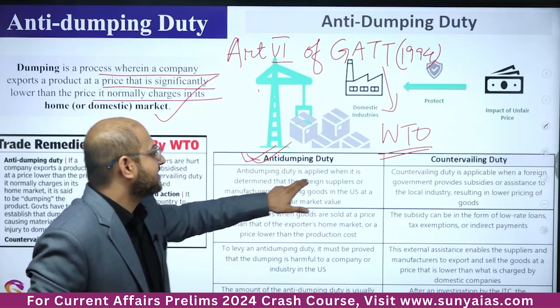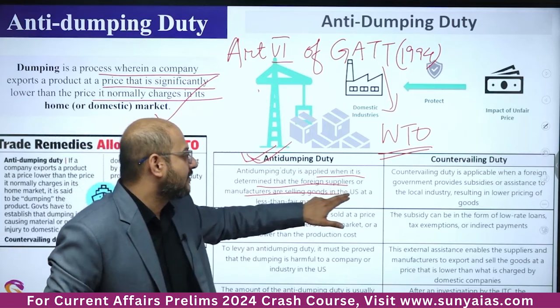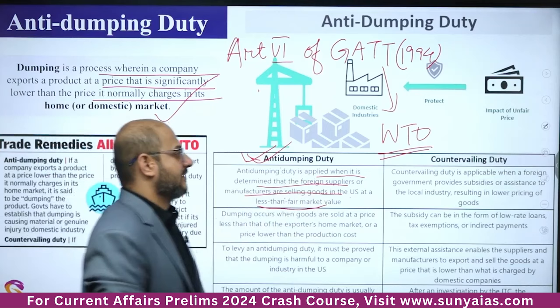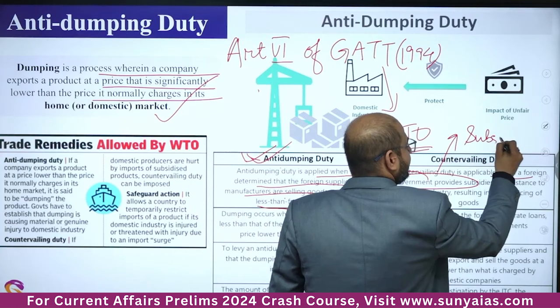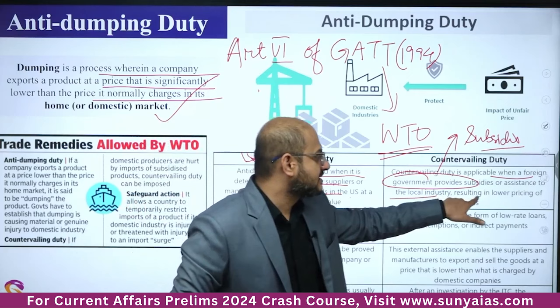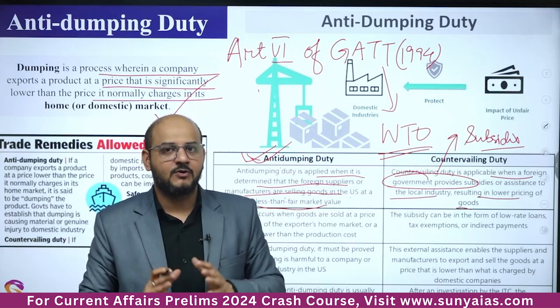To summarize the difference: anti-dumping duty is applied when foreign suppliers are selling goods at less than fair market value. Countervailing duty is applicable when a foreign government provides subsidies or assistance to local industry, resulting in lower pricing due to competition.